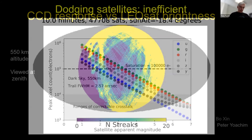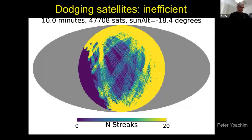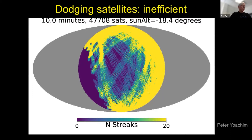If we were to attempt to avoid these satellites, Peter Yoachum came up with this scary forward simulation of only 10 minutes of observing, where you see there's no place to hide in the sky. This is a very inefficient process if you have something like our rapid cadence. So we can't really avoid 40,000 satellites, and there are going to be many more than that.